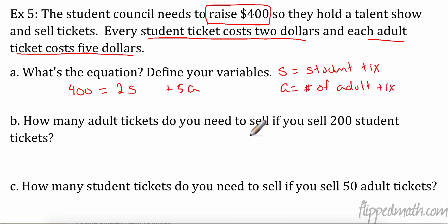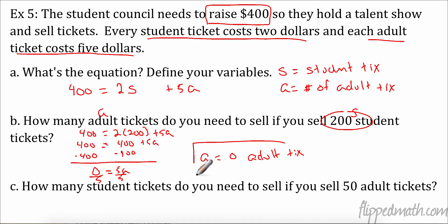How many adult tickets do you need to sell if you sell 200 student tickets? So this is going to be my S and I need to find my A. So 400 equals 2 times my S of 200 plus 5A. So now I have some simplifying on this side and we'll solve. So 2 times 200 is 400 plus 5A. I'm going to subtract 400. So 5A equals 0. And if I divide by 5, A is 0 adult tickets. So if we sell 200 kid tickets, we don't need any adult tickets. Nice.